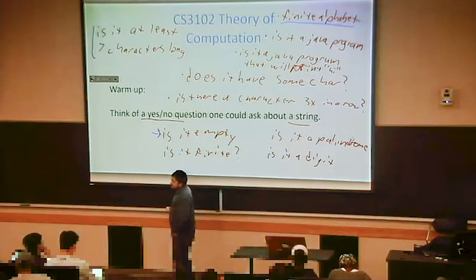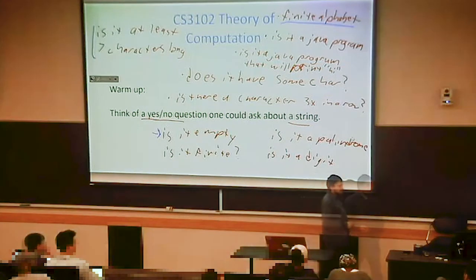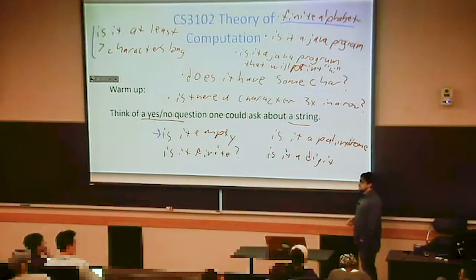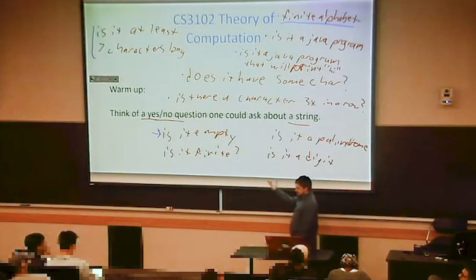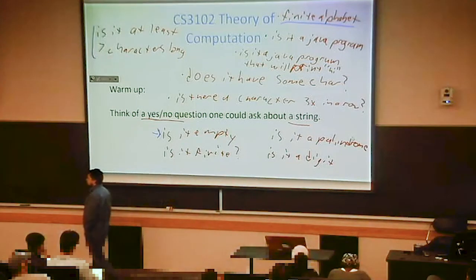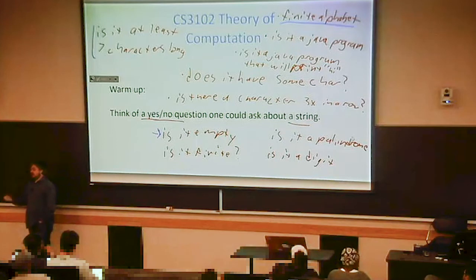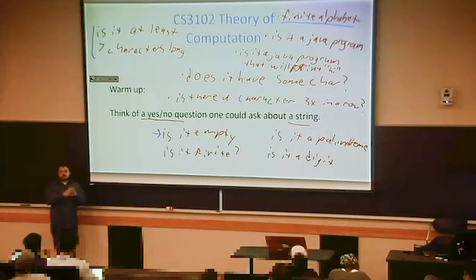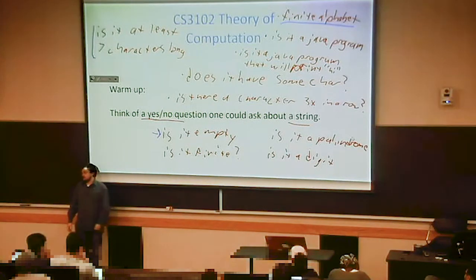You can have infinite languages. For instance, how many strings are in the 'at least seven characters long' language? There's an infinite number of strings. So we can't just exhaustively check — we have to do something else. That's where computing really starts to get interesting: when there's an infinite number of possibilities, how do we know that we're looking at one?